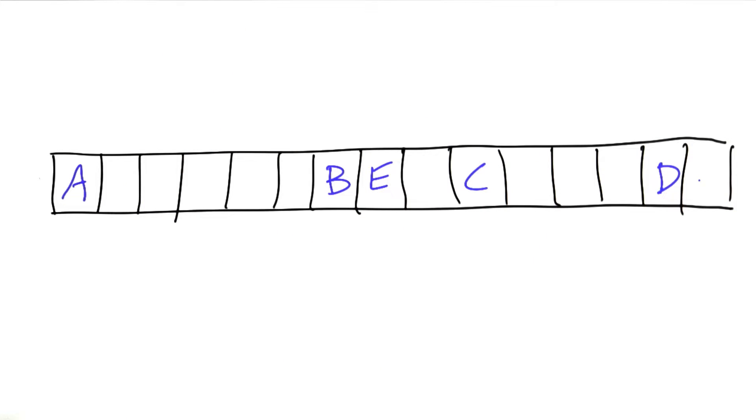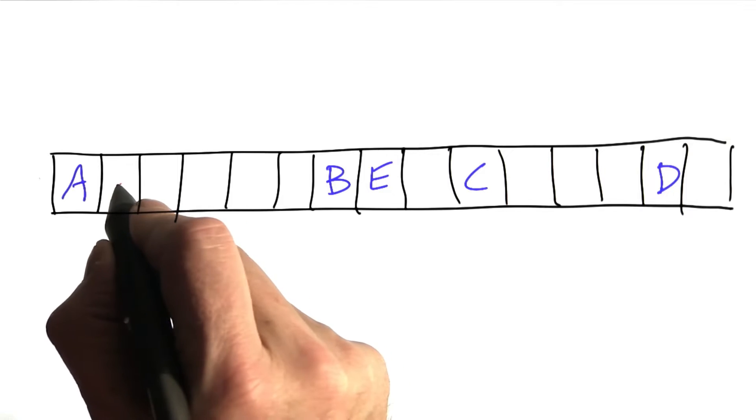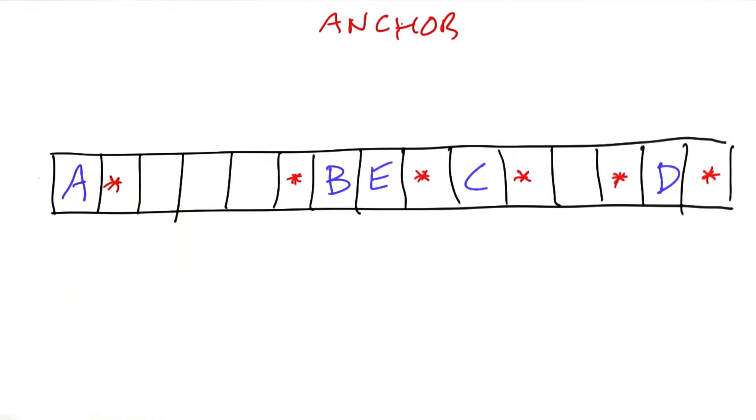Now the rules say that at least one letter that you play has to be adjacent to an existing letter on the board. So we'll mark with red asterisks such squares and we call these anchor squares. These are the squares that we can start from and then we build out in each direction forming consecutive letters into a single word.